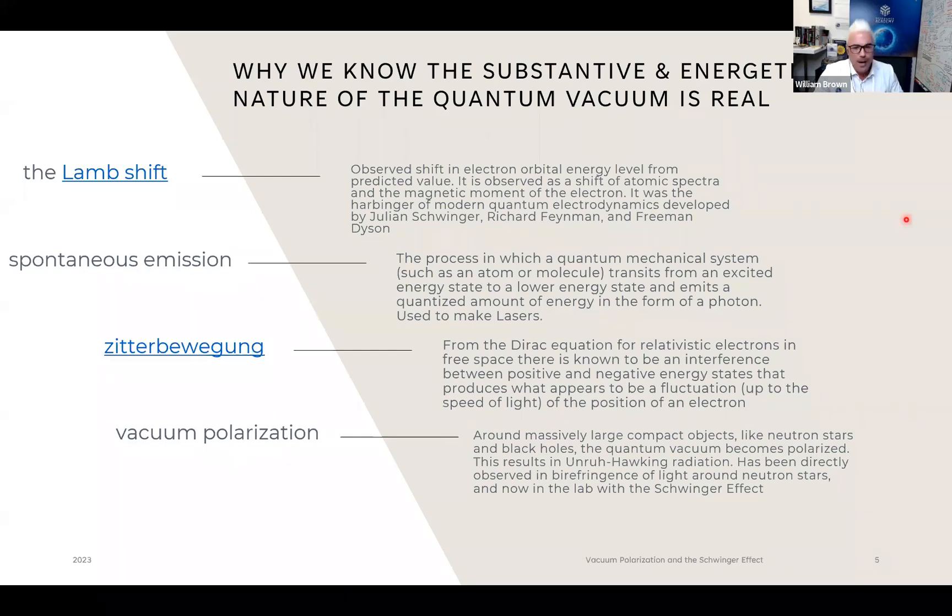So we have the theoretical basis for why we would expect there to be a non-zero energy value to even what is considered empty space. We're understanding, we're beginning to understand that there really is no such thing as empty space. Empty space has an intrinsic non-zero energy, the zero-point energy density. Now, we know that this is the case. The substantive and energetic nature of the quantum vacuum is real. And these are a few examples of how we know that these energetic fluctuations of space are...